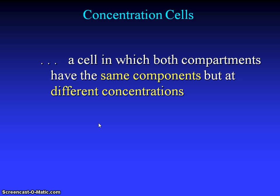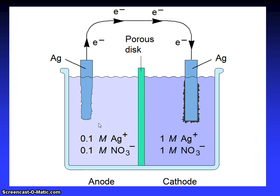A concentration cell is one in which both compartments have the same components but at different concentrations. You can see silver, porous disk, silver. Here the 0.1 M Ag+, here 1 M Ag+. Here 0.1 M NO3-, here 1 M NO3-. Another portion is the cathode.